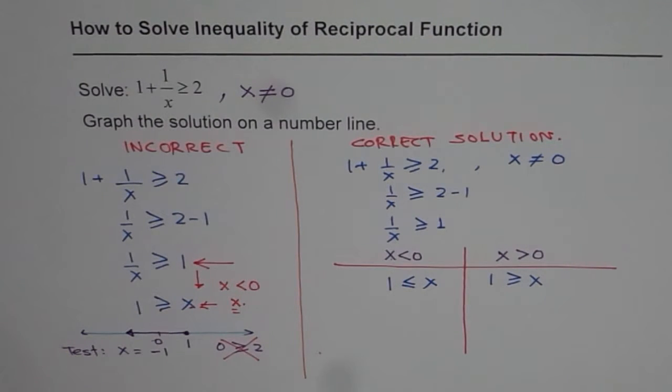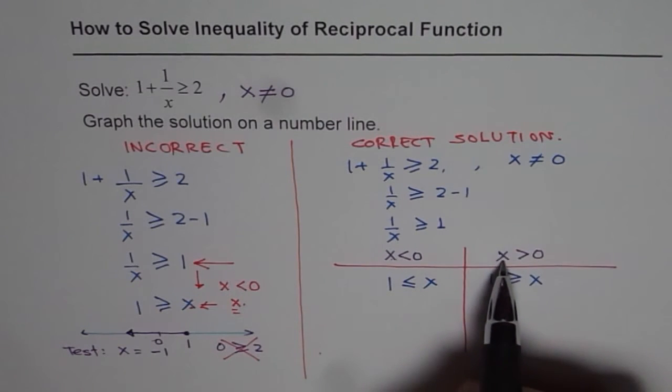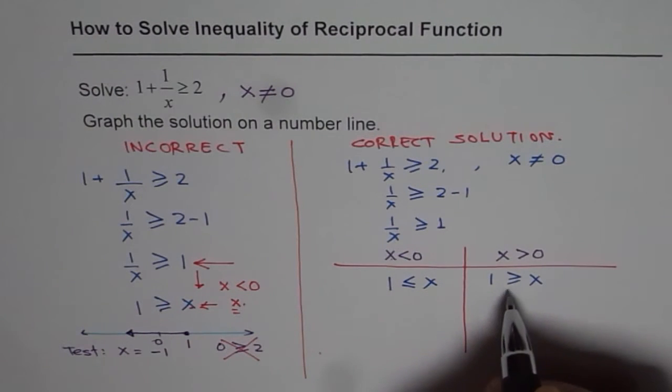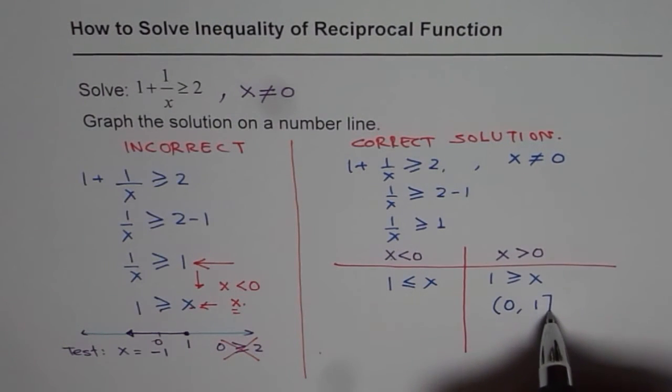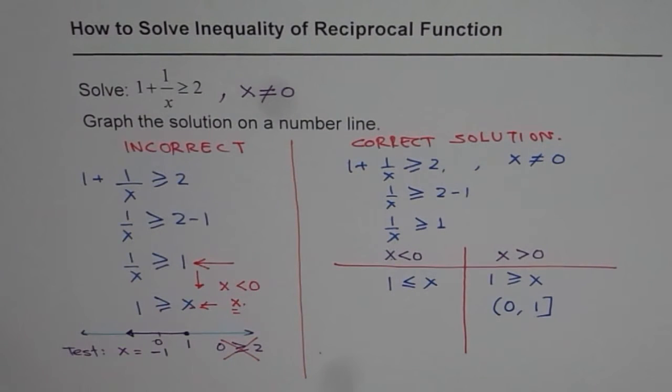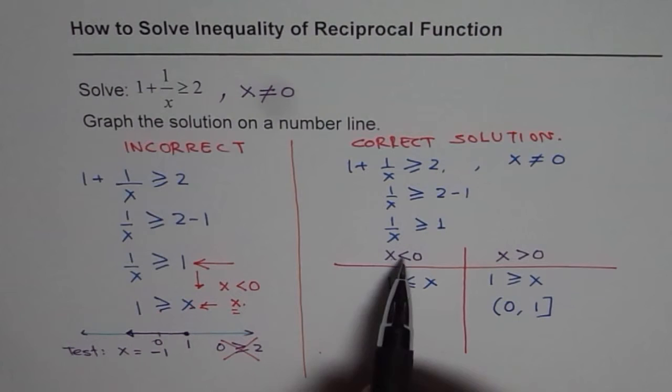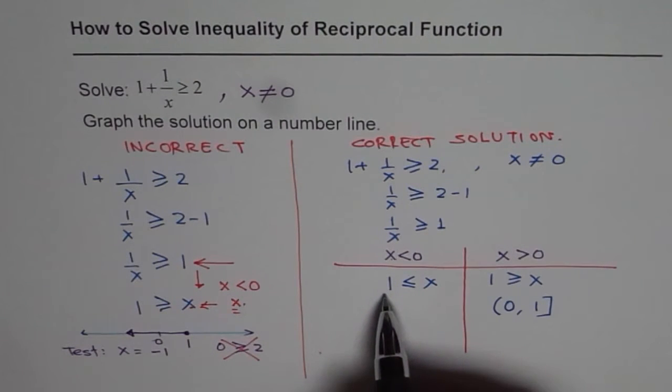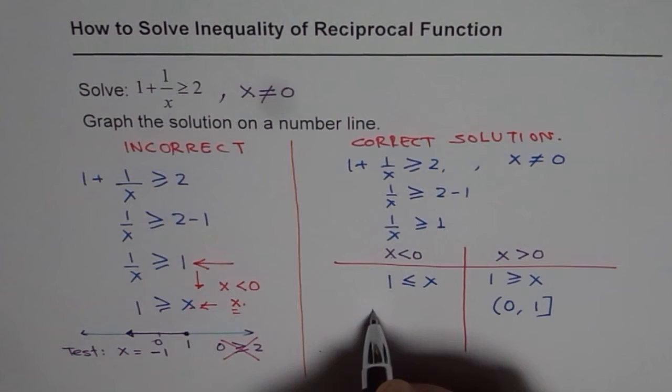Now how to write the solution? Now in this case we are saying x is greater than 0. In that case x should be less than equal to 1. That means that the solution is from 0 to 1. So it does not include 0 but it includes 1. So that is the solution on this side. On the other hand we are saying when x is negative then x should be greater than equal to 1. Now how is that a solution? When x is negative it cannot be greater than 1. So that is no solution.